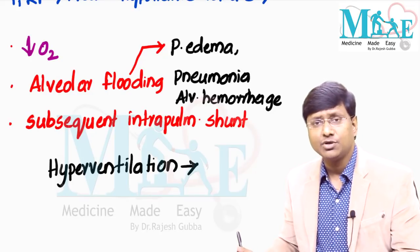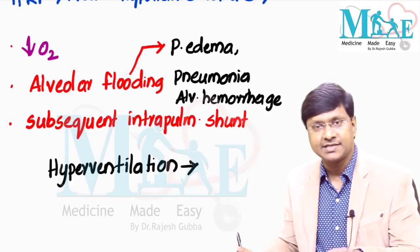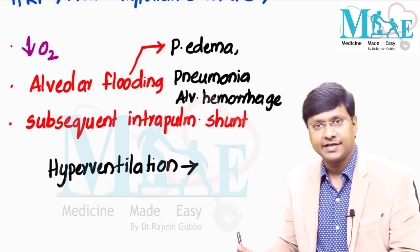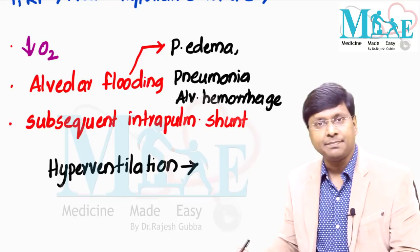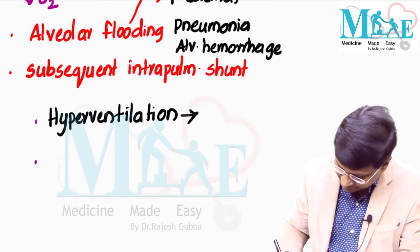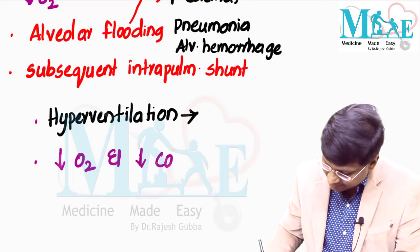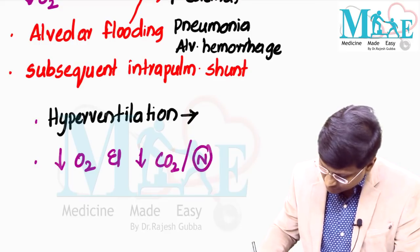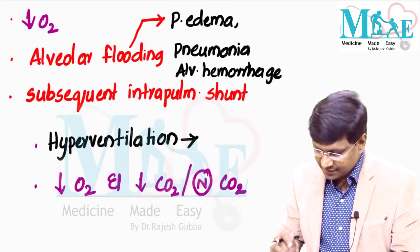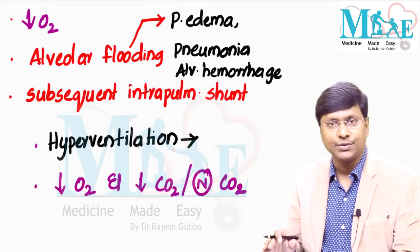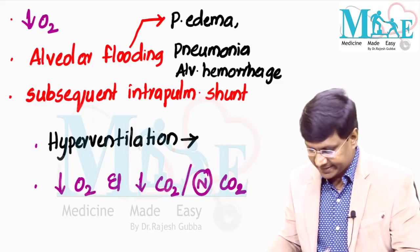In patients with Type 1 respiratory failure, you will have hypoxemia and either decreased or normal carbon dioxide levels. The basic pathology is alveolar flooding and subsequent intrapulmonary shunt. The basic physiological mechanism is hyperventilation.